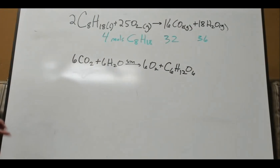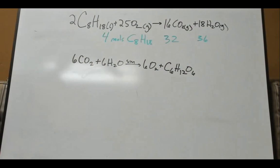What if we had four moles of octane? Think about how many moles of CO2 and water we would produce. We would produce double: 32 moles of CO2 and 36 moles of water. We can use these moles in what's known as a molar ratio, just like we can look within a compound. The last question on your chapter three quiz dealt with this type of calculation — using a molar ratio to help determine the amount of something.